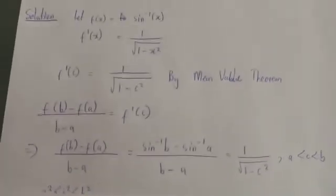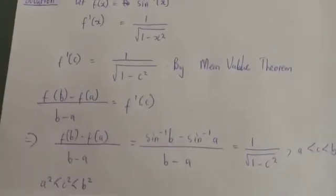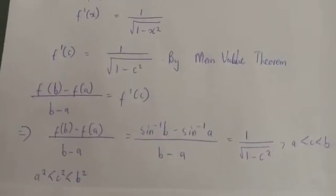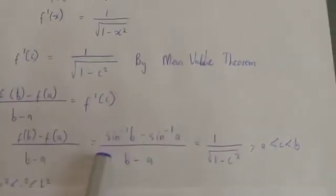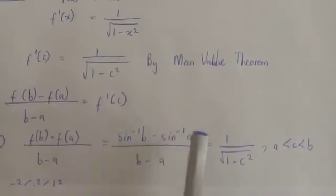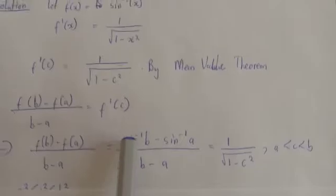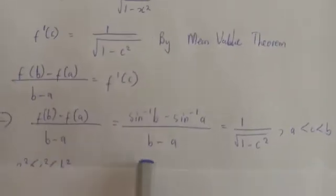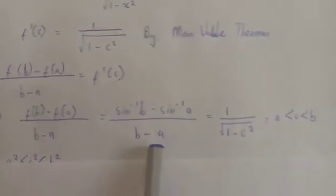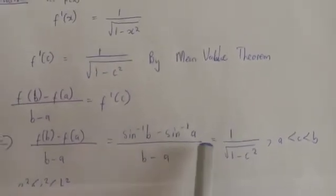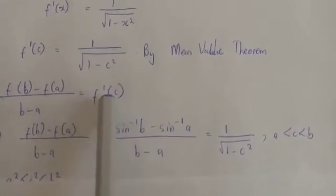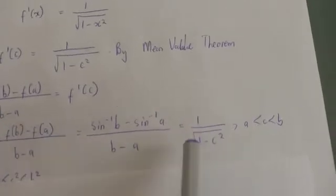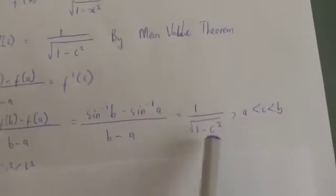Now it is a matter of substitution. We substitute: [f(b) − f(a)] = arcsin(b) − arcsin(a), so [arcsin(b) − arcsin(a)] / (b−a) = 1/√(1−c²).